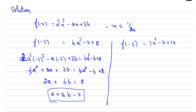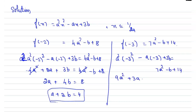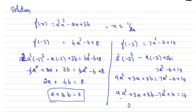Similarly, substitute x = -3: a²(-3)² - a(-3) + 3b = 7a² - b + 14, which implies 9a² + 3a + 3b = 7a² - b + 14. Simplifying: 9a² + 3a + 3b - 7a² + b = 14, so 2a² + 3a + 4b = 14. This is the second equation.